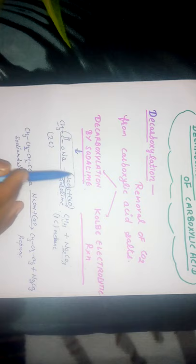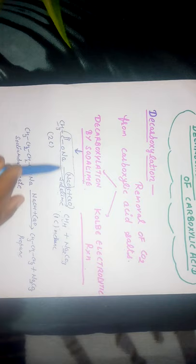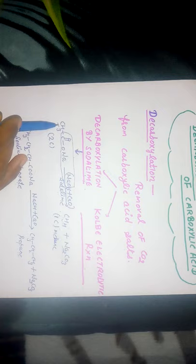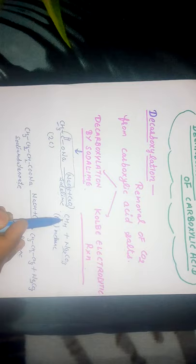Sodium acetate reacts with sodium hydroxide. Soda lime is a mixture of sodium hydroxide plus calcium oxide — we call this mixture soda lime. Sodium acetate is heated with sodium hydroxide; sodium carbonate is eliminated, and the methyl group combines with hydrogen. So the product we get is methane.